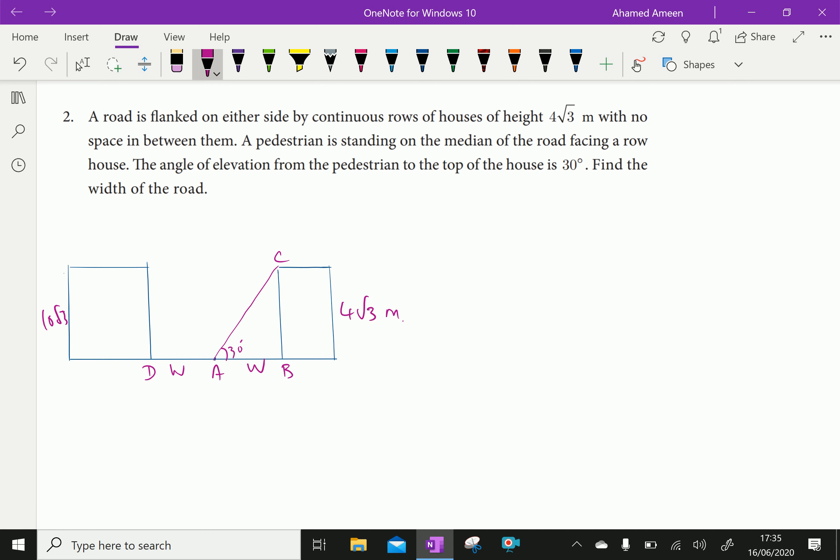Now, the angle of elevation, angle of elevation of the top of the house is 30 degree. That is, let it be alpha equal to 30 degrees.